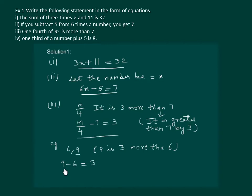And we have used the same concept when we are saying that m by 4 is 3 more than 7. So, m by 4 minus 7 should give us 3.